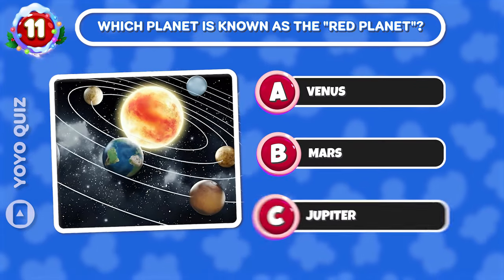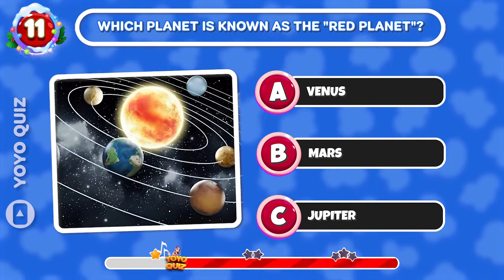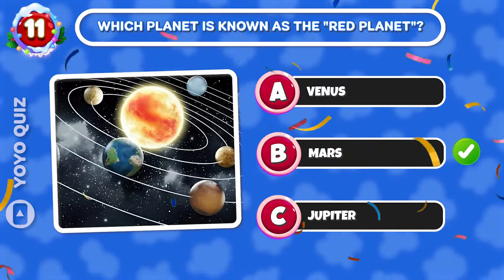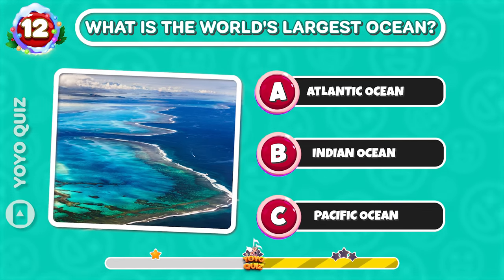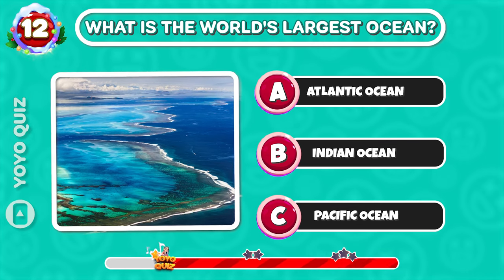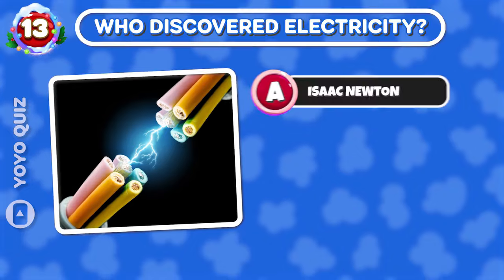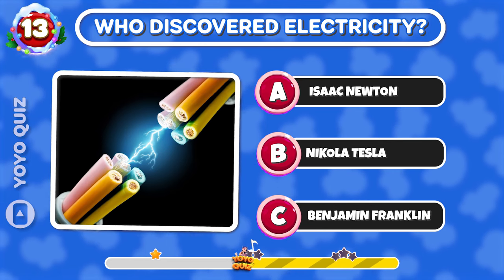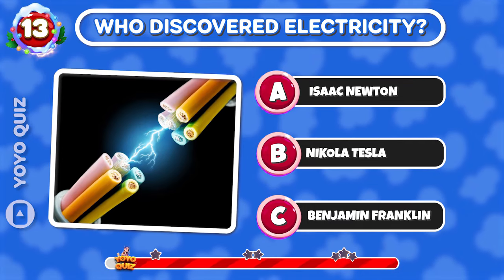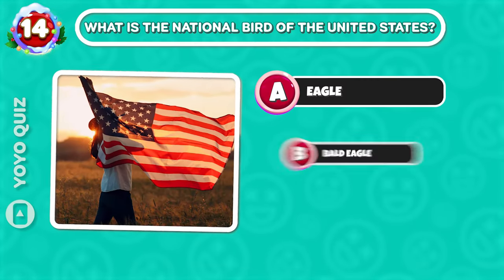Round 11: Which planet is known as the red planet? It's B. Round 12: What is the world's largest ocean? C is the correct answer. Round 13: Who discovered electricity? It's the correct answer.